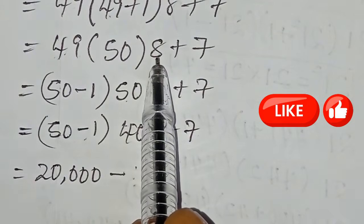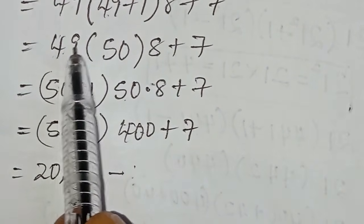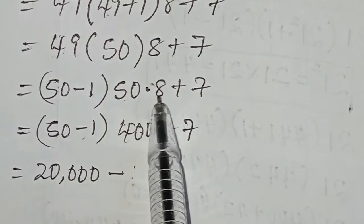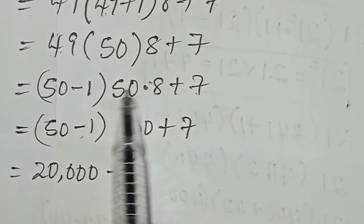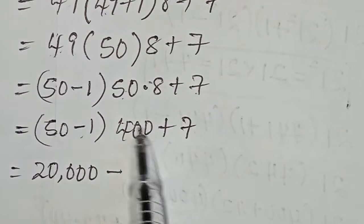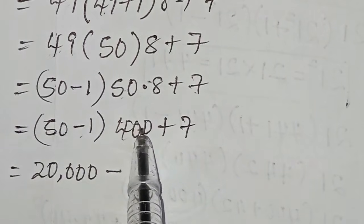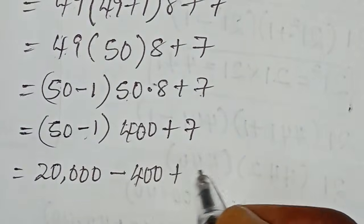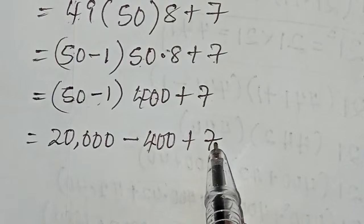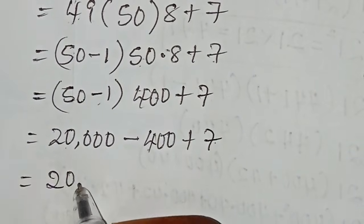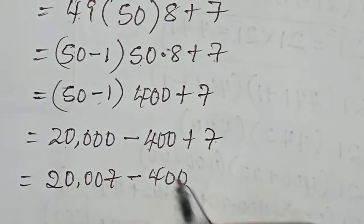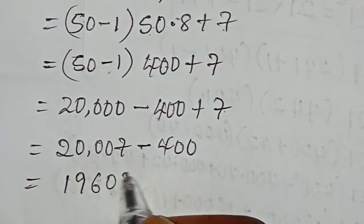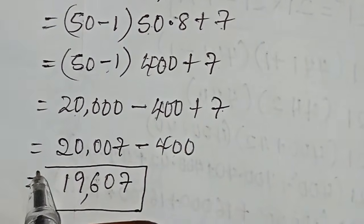We rewrite 49 as 50 minus one. So we have 50 minus one, multiplied by 50, multiplied by eight, plus seven. Multiplying 50 by eight gives 400. Then 400 multiplied by 50 equals 20,000, and 400 multiplied by one equals 400. So we get 20,000 minus 400 plus 7, which equals 19,607 — our final answer.